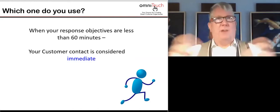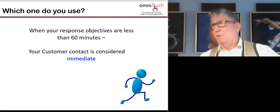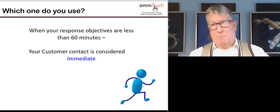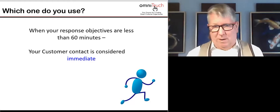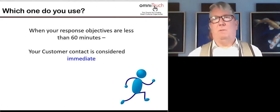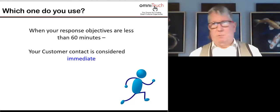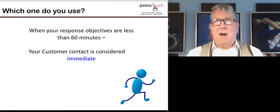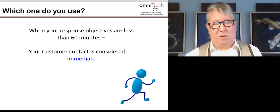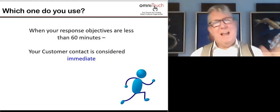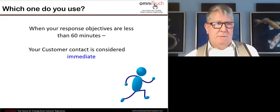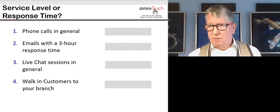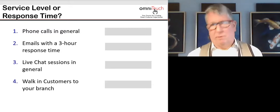In contact centers we're used to handling 80% of calls in 30 seconds or 90% in 10 seconds, so when they hear 'minutes' people are surprised. But think about walk-ins: if you walk into a bank branch, you can't serve people in 20 seconds, so a KPI might say 'we will serve 70% of walk-in customers within 20 minutes.' In mobile phone shops, you take a queue number with your number flashing on a board — that system also tracks how well the shop meets its service level objectives. So up to the 60-minute mark it's immediate; after that it's not. Take a moment and look at the screen — where the gray boxes are, would you fill in service level or response time for each contact type?